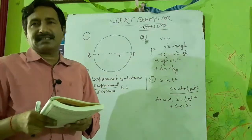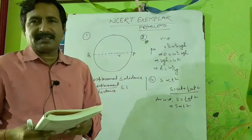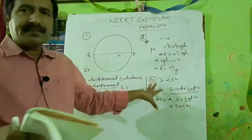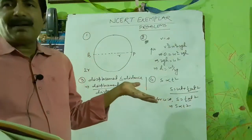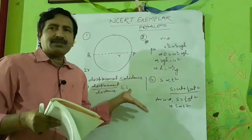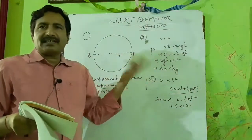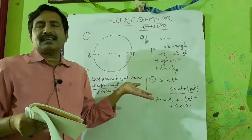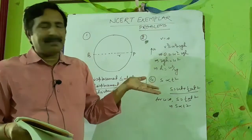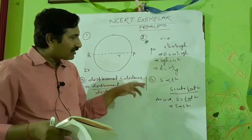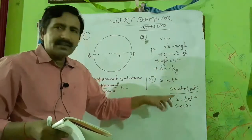It means the motion is uniformly accelerated, so the answer is B — uniform acceleration. This can be discussed using differentiation, but that is in the class 11 syllabus. For class 9, just use the formula to solve the question.